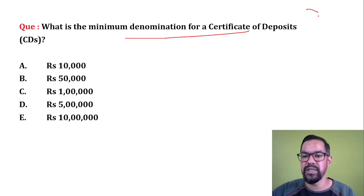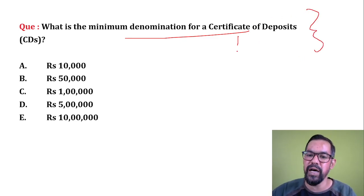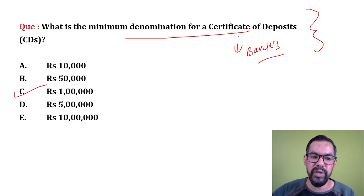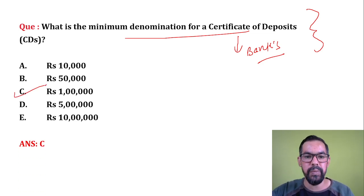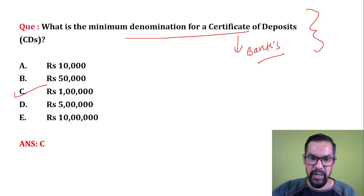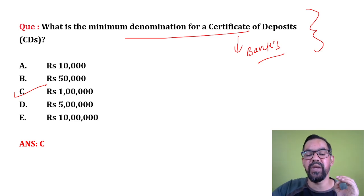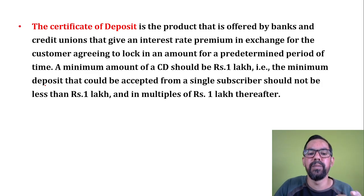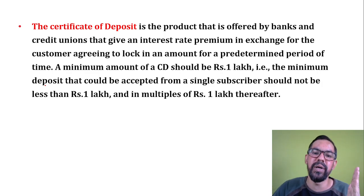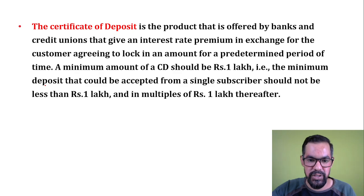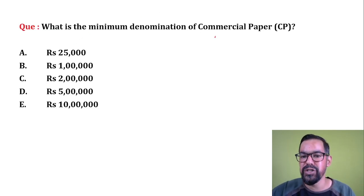What is the minimum denomination of CDs — Certificates of Deposit? CDs are issued by banks and financial institutions in a denomination of rupees 1 lakh and multiples thereof. Option C is correct. For comparison: Treasury Bills have a denomination of 25,000 rupees, Commercial Paper is 5 lakh rupees. In terms of risk: CDs are moderate risk, Commercial Paper is highly risky, and Treasury Bills are the least risky money market instrument.